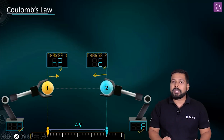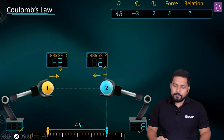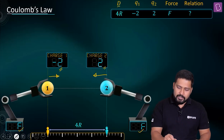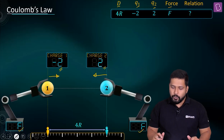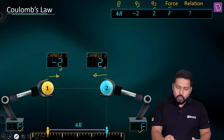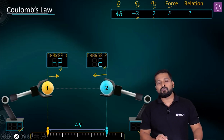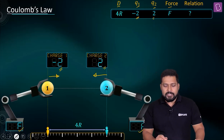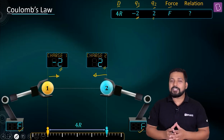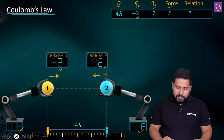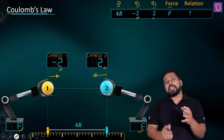Let's begin the experiment. Our table has columns for distance, charges Q1 and Q2, value of force, and the relation. Initially, Q1 is +2 and Q2 is −2, the force is attractive, the distance is 4, and we want to figure out the relation between all these quantities.